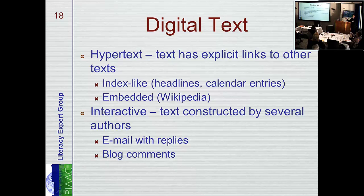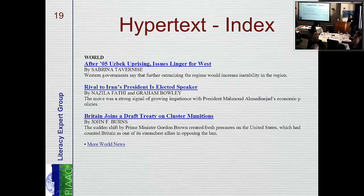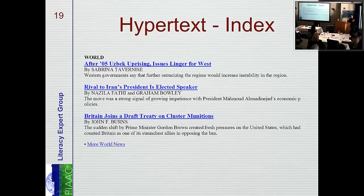As of around 2008 or 2009, we started picking out different kinds of digital texts and making sure that in our selections of materials, we were including assessment items that probed your ability to understand and use these texts, including using the unique features of them that distinguish them from just the paper and print version. We really do have individuals move through hyperlinks in order to find and locate information. Just like you have to use an index to find something, you have to use a hyperlink — this is part of your literacy skill.